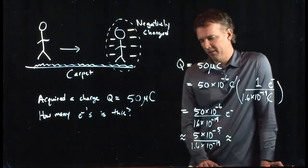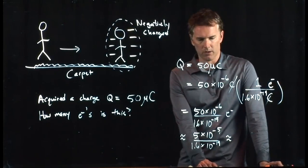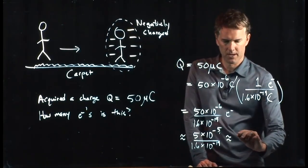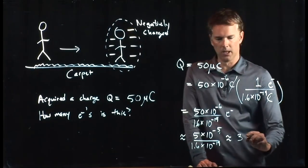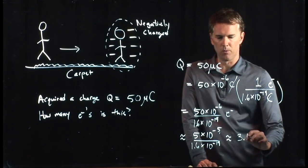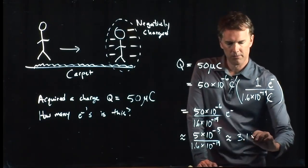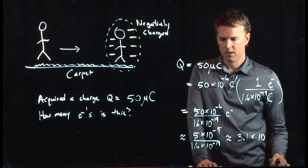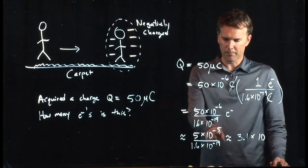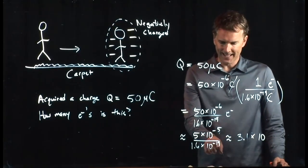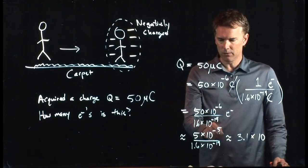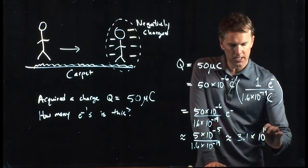And 5 over 1.6, it's got to be really close to 3, right? Maybe a little bit more. 3.1 times 10 to the what? We've got a minus 5 up there. We have a minus 19, so we're going to add 19 to a negative 5, and so we get 14.